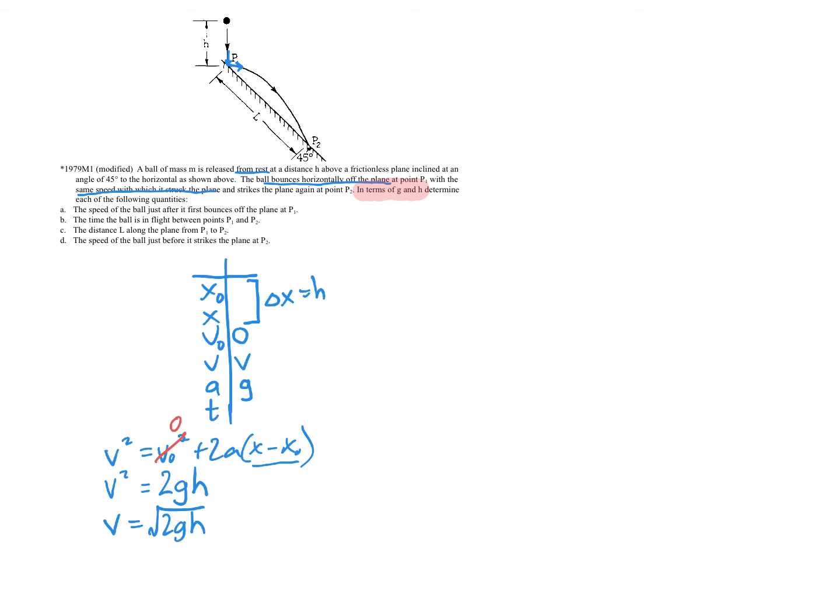So with the variables that we have, it should be pretty clear that we're going to use the equation V squared equals V naught squared plus 2A times X minus X naught. The V naught is zero, so that's actually going to go away. And then we've got 2 times the acceleration, which is G times that change in position, which is H. We'll take the square root of both sides, and we know that our final velocity is the square root of 2GH. And knowing that that's the velocity right before it strikes, it's going to rebound with the same speed.